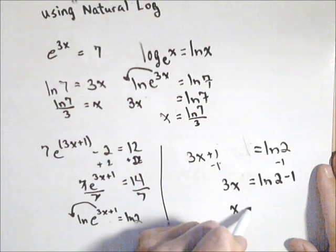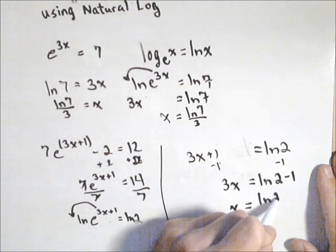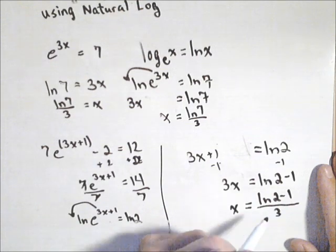Last step, once again, to divide by 3. We're going to get x equals ln of 2 minus 1 all over 3.